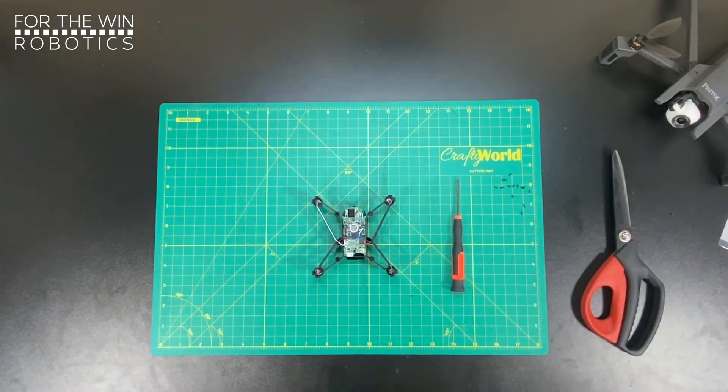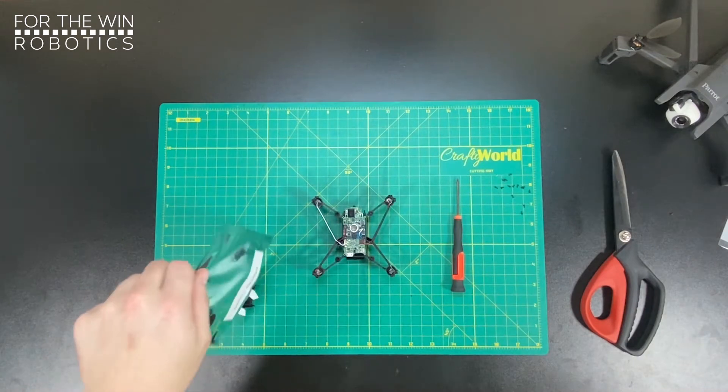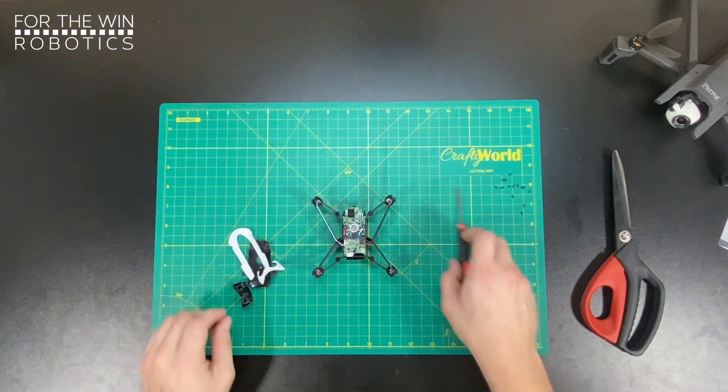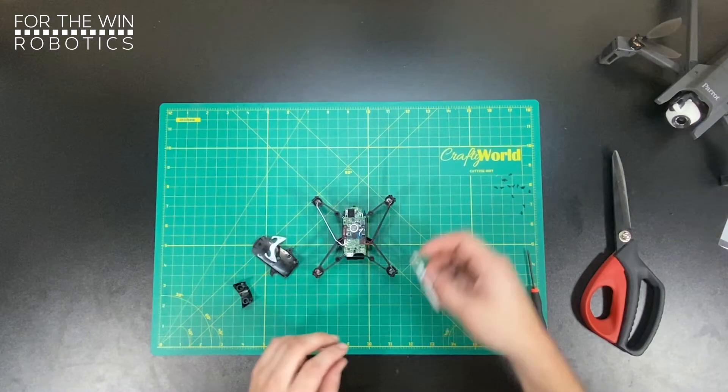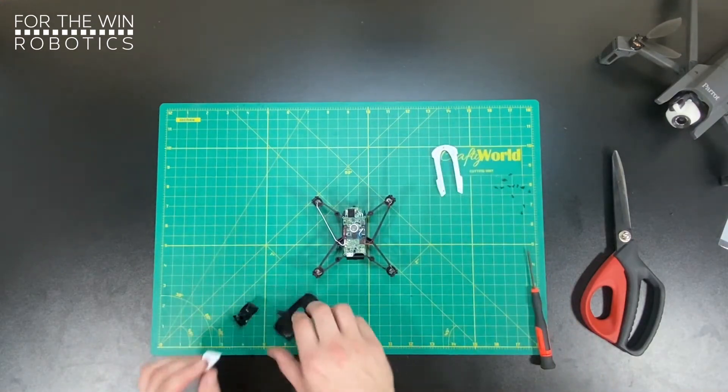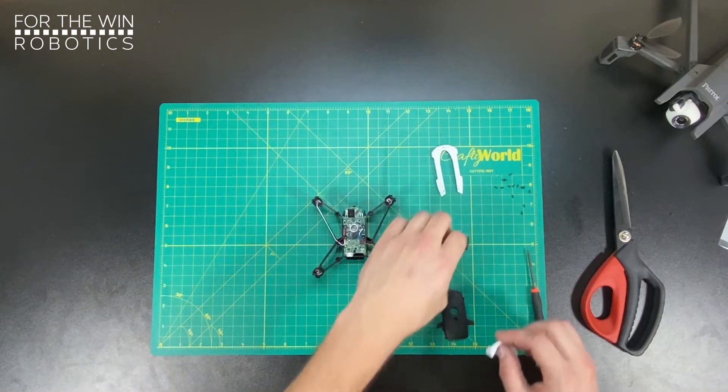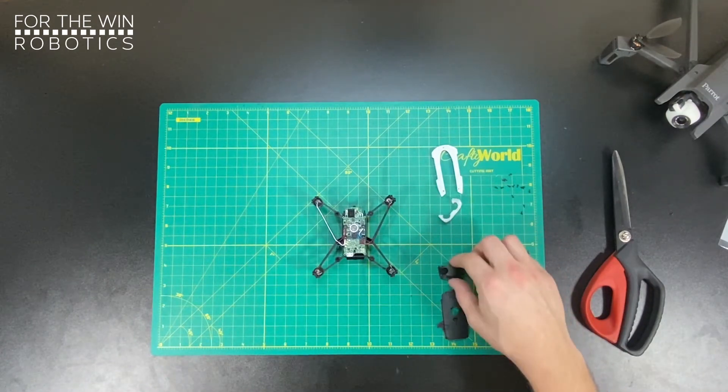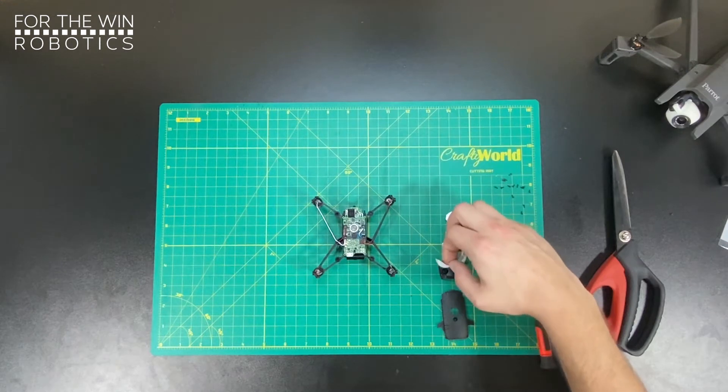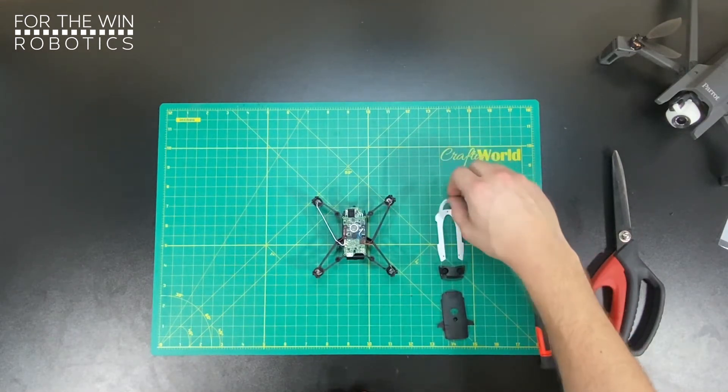So let's open that up. There are four pieces here: a top and a bottom cover and two faceplates. We're going to do the bottom cover first just to secure the PCB, then the faceplate, then the top cover, and then the final faceplate.